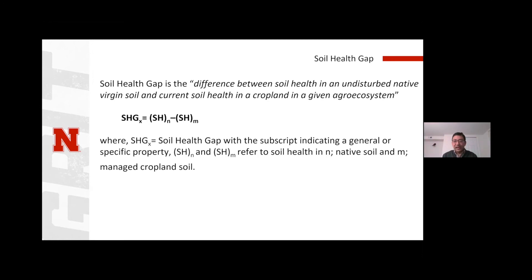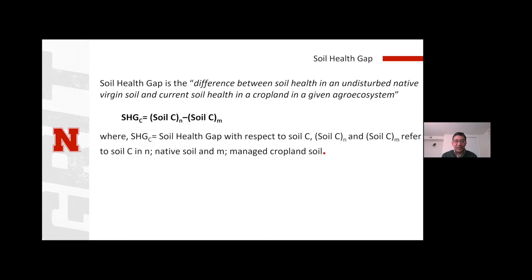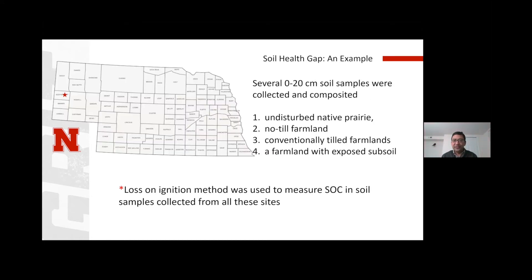We are still figuring out which indicator to focus on. Depending on that, the soil health gap will be this simple equation: gap equals soil health — a single property or a function of several properties measured in the native soil minus the cropland. To simplify, let's say we're looking at organic matter. The gap with respect to organic carbon would be the carbon you see in the native soil minus the carbon in your current cropland. To verify this concept, we did some simple soil sampling in Scotts Bluff County.